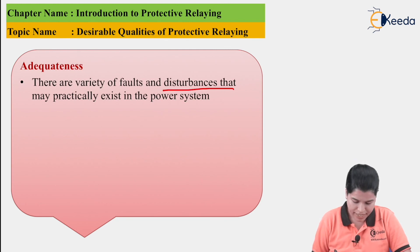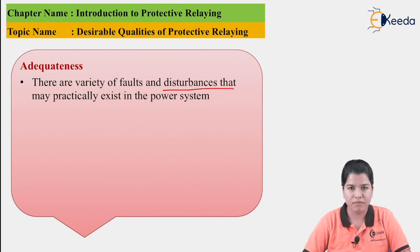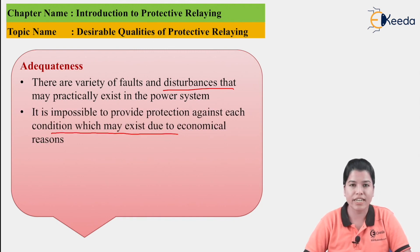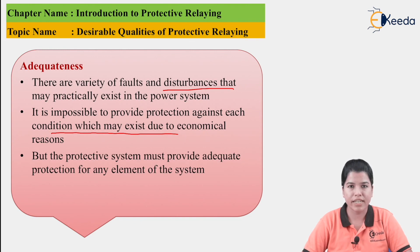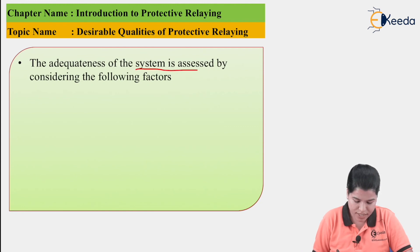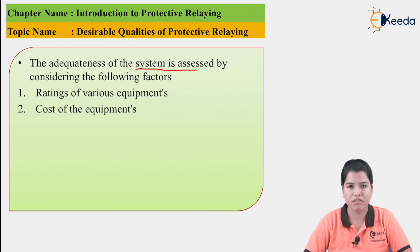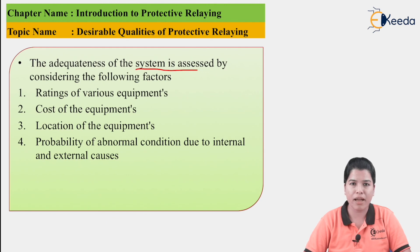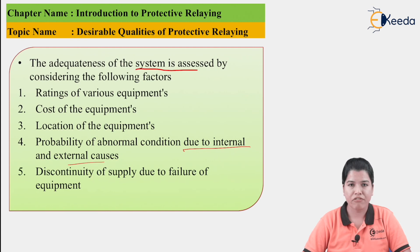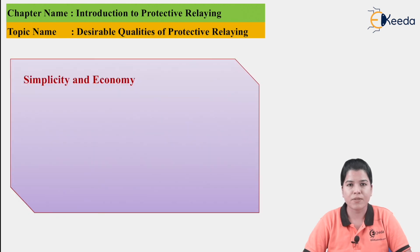Next is Adequateness. There are a variety of faults and disturbances that may practically exist in the power system, and it is impossible to provide protection against each and every condition due to economic considerations. However, the protective system should be designed to provide adequate protection to each and every equipment. The adequateness of the system can be assessed by considering factors such as: ratings of various equipments, cost of equipments, location of equipments, probability of abnormal conditions due to internal and external causes, and discontinuity of supply due to failure of equipments.